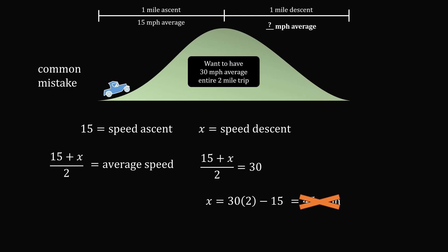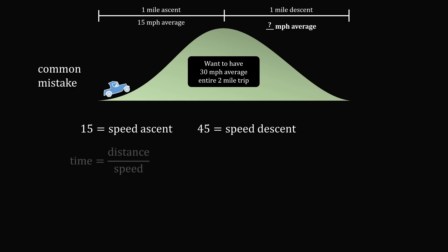To illustrate why 45 miles per hour is wrong, let's go ahead and calculate the average speed for the entire trip. So, suppose 45 is the speed of the descent. How much time will the entire trip take? Time is equal to distance divided by speed. So, let's first calculate the time to ascend the hill. This will be equal to the distance of one mile divided by the speed of 15 miles per hour. We then need to add the time on the descent, which will be 1 mile for the descent divided by 45 miles per hour, which is the speed. So, this is equal to 1 over 15 plus 1 over 45, which simplifies to be 4 over 45 hours.